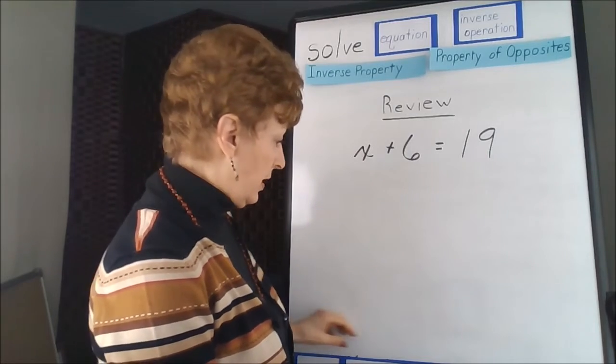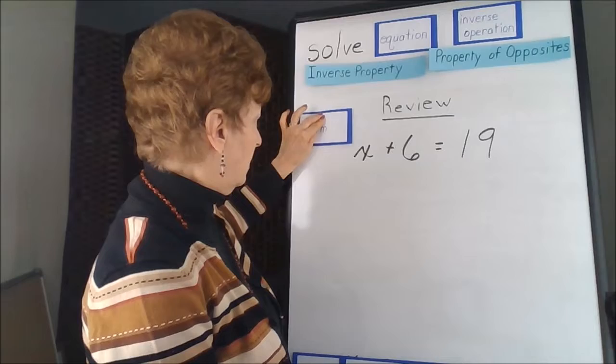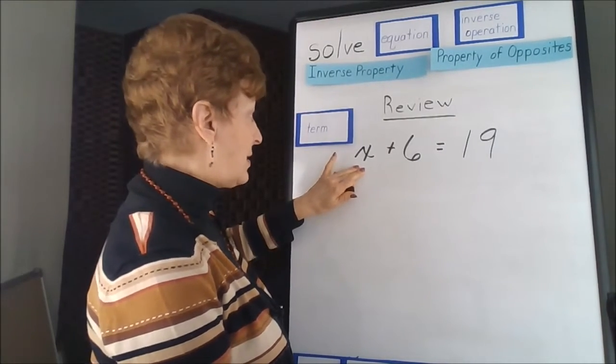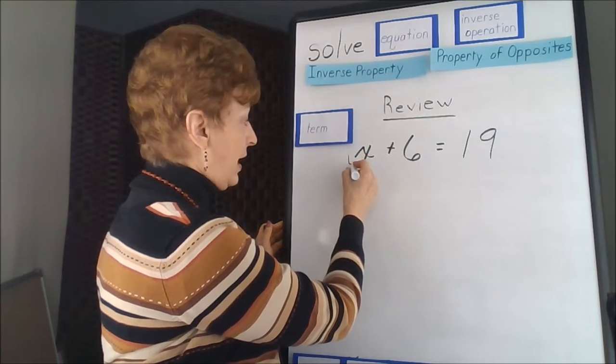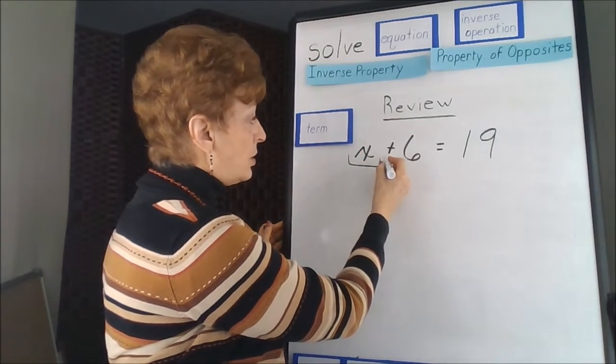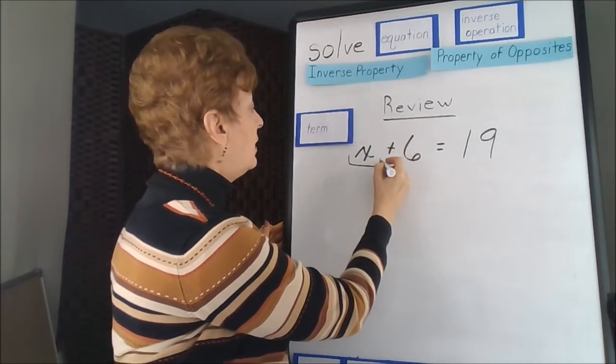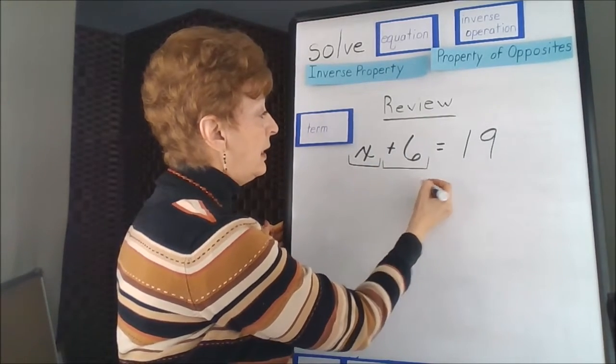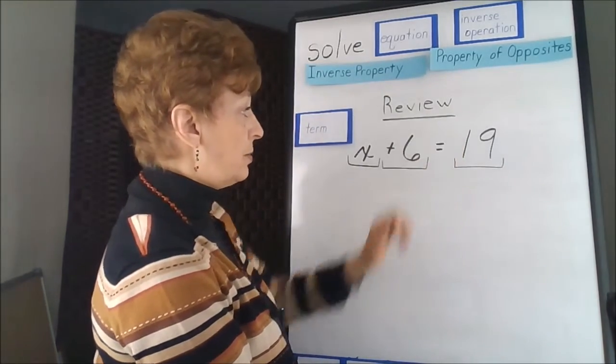Our terms in this equation are x. There is an understood positive sign before that x. The next term starts with the next positive or negative sign, so this is a term. And lastly, this is a term with an understood positive sign.